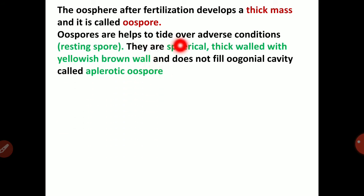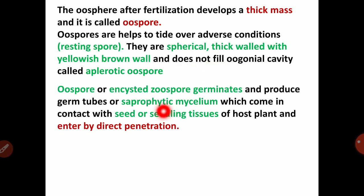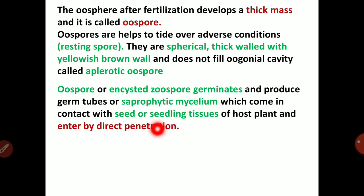Oospores are resting spores that help to tide over adverse conditions. They are spherical, thick-walled, with a yellowish-brown wall, and do not fill the oogonial cavity — called apleurotic oospores. The oospore germinates and produces germ tubes or saprophytic mycelium which comes in contact with seed or seedling tissues and enters by direct penetration. Pectinolytic enzymes of the fungus dissolve the pectins holding cells together, resulting in maceration of tissues.